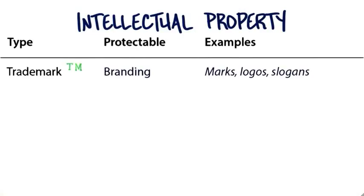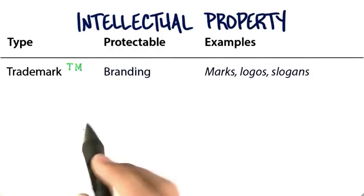The last piece I want to talk about for resources is intellectual property. There are great law firms who can give you tutorials, and there's plenty of stuff on the web. But the types of intellectual property — shorthand IP — you want to think about are these. There are five.